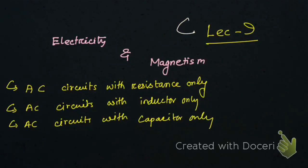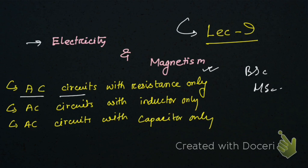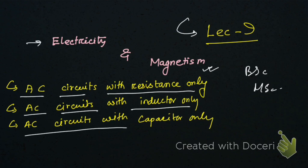Hello friends, welcome to lecture number nine of Electricity and Magnetism for BSc and MSc. Here we're going to discuss AC circuit with resistance only, AC circuit with inductor only, and AC circuit with capacitor only, with phasor diagrams.